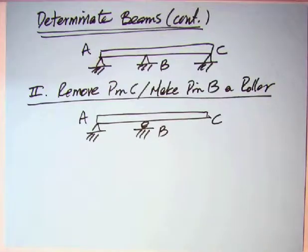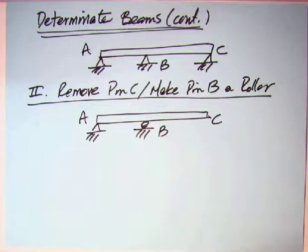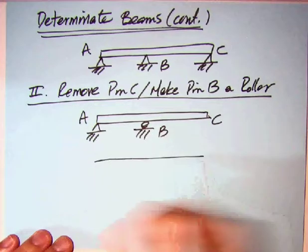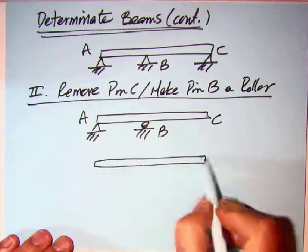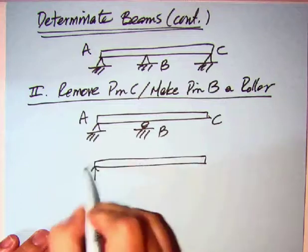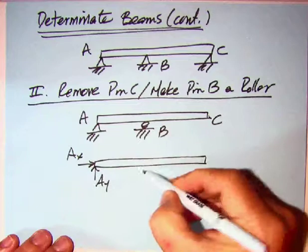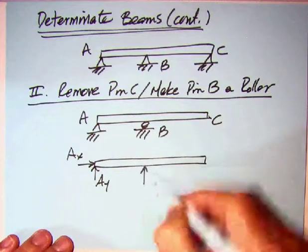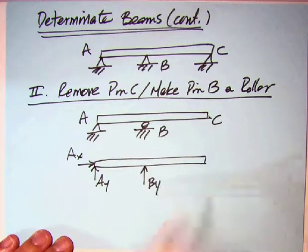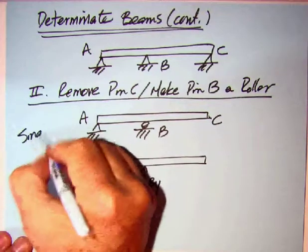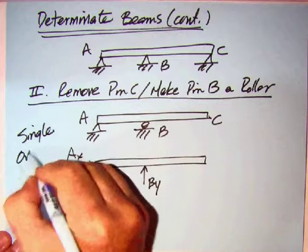The next possibility is this: let's remove the pin way out at C and make pin B a roller. So we've now got the following free body diagram. We still have our AX and AY over here at A, but now our vertical force is here, BY. And what that's called is called the single overhang.